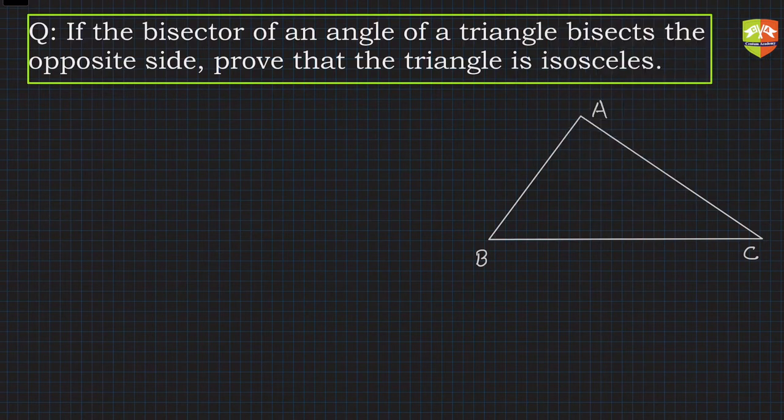This is the bisector. Let me draw once again. So this is my bisector. What does this mean? This means that this is angle x, so this one is also angle x.